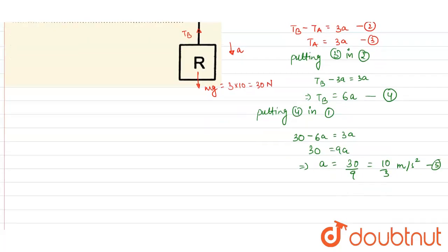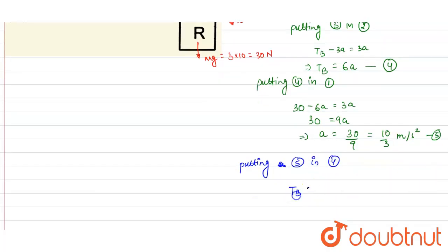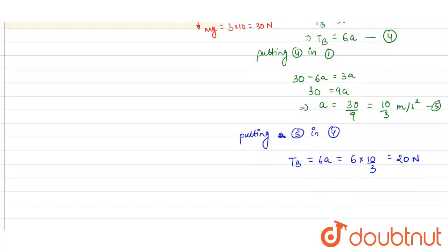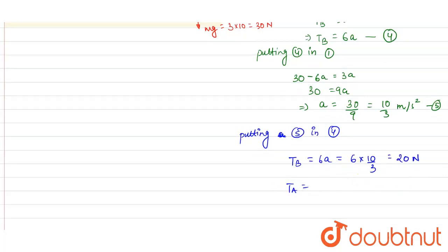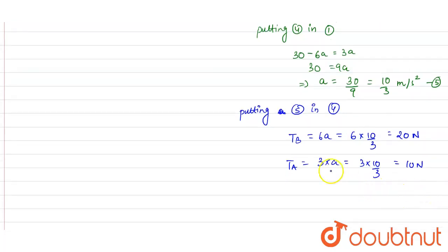Putting the value of acceleration from equation 5 into equation 4: T_B = 6A = 6 × (10/3) = 20 N. And T_A = 3A = 3 × (10/3) = 10 N. So the tensions in strings A and B have been calculated.